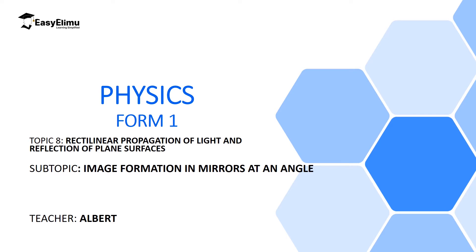Remember in the previous lesson when we looked at formation of images on a mirror, we realized that when we have one mirror and an object in front of it, one image will be formed inside that mirror. Now in this lesson we are going to consider when we have two mirrors placed at an angle, and what we are going to realize is that several images will be formed depending on the angle between the two mirrors. My name is Albert, I hope you will enjoy the lesson.